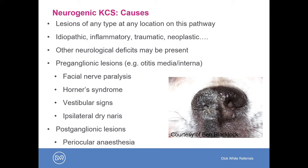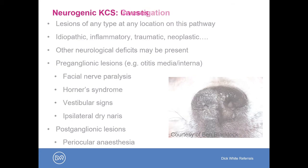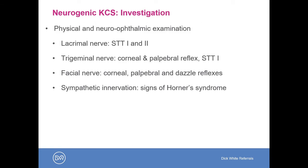It's really worth looking out for these other signs. As well as performing a normal eye and physical examination, it's worth thinking about the neuro-ophthalmic examination. When we perform Schirmer tear test 1, we are also assessing the function of both the lacrimal nerve and the trigeminal nerve — the sensory nerve endings which are knocked out following application of local anaesthetic, and therefore are not being assessed in Schirmer tear test 2.